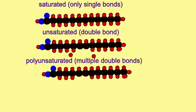Unsaturated fatty acids may possess one double bond, or multiple double bonds, and thus be polyunsaturated fatty acids.